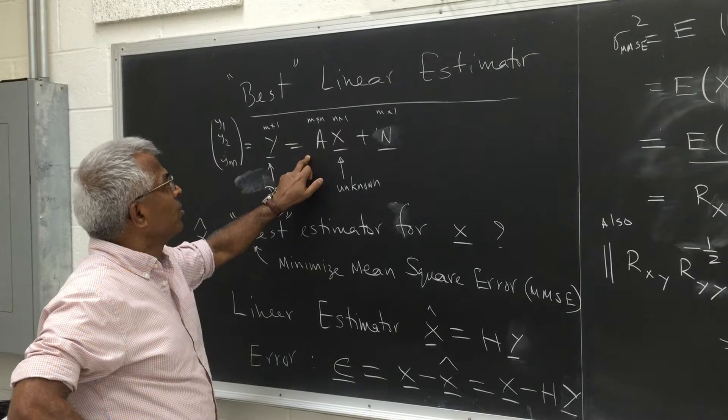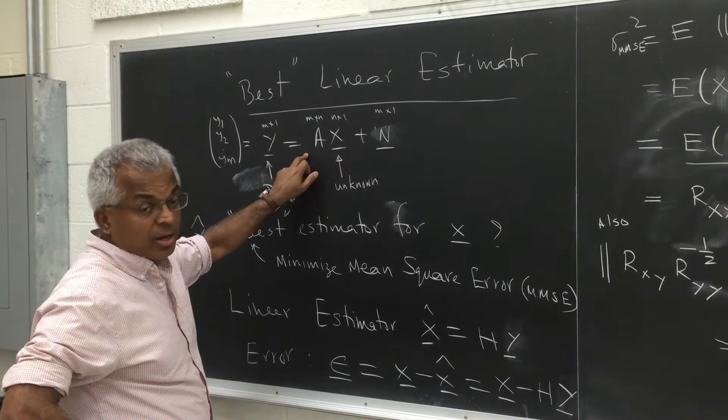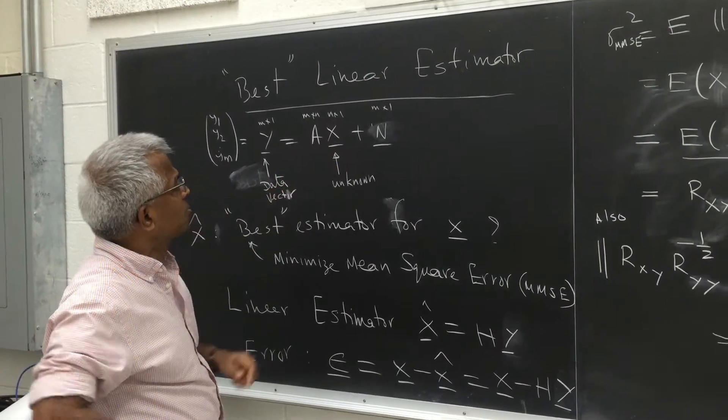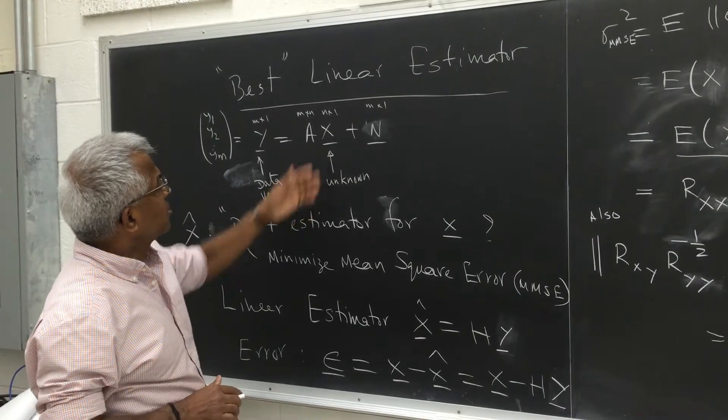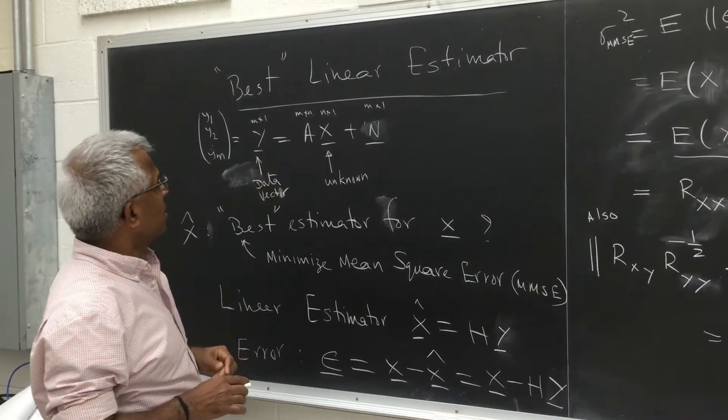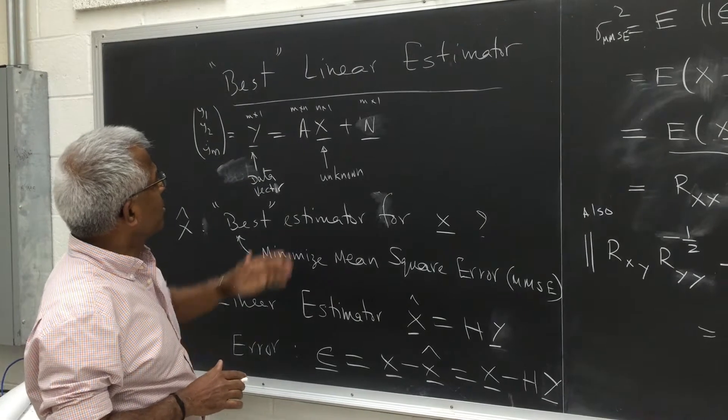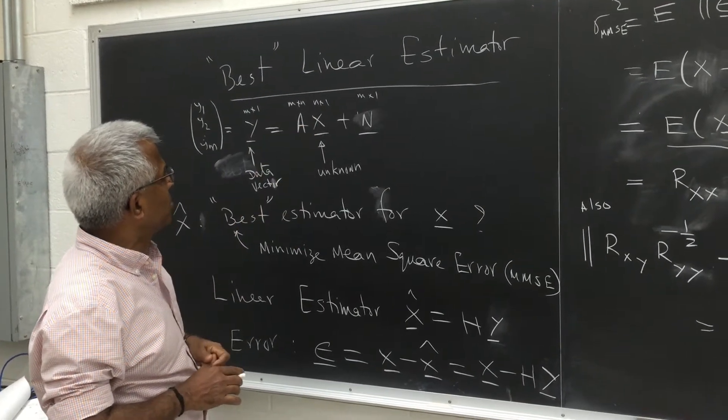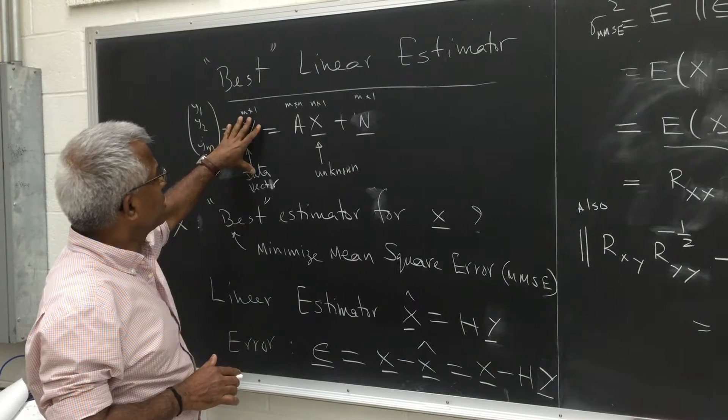So if you have a linear model, it's possible you may not have a linear model. It will be of the form ax plus n. So x is the unknown. This is generally the inverse problem where you need to determine the best value for the unknown from the data.